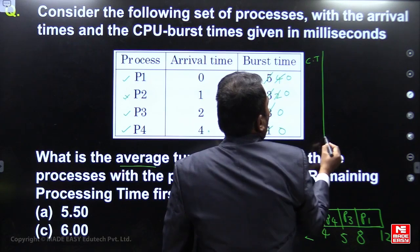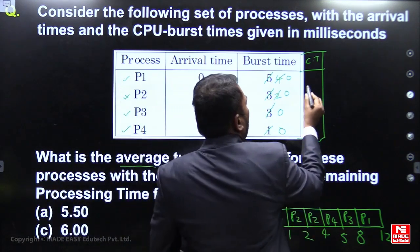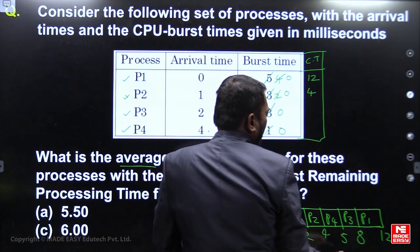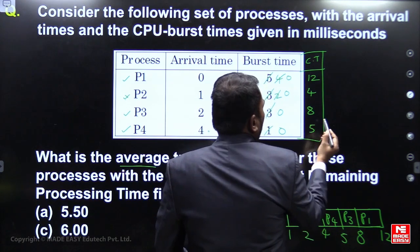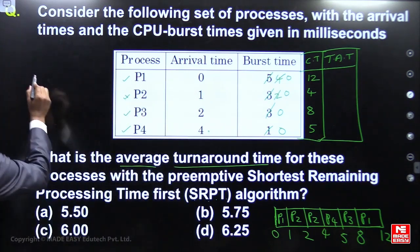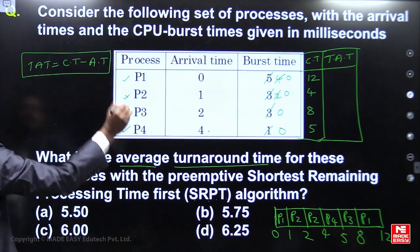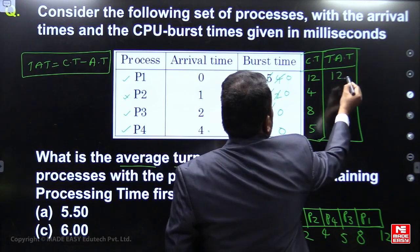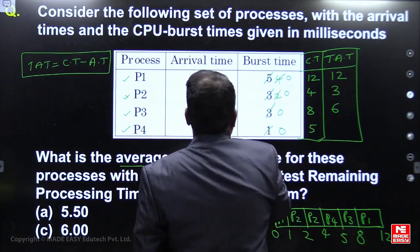Now find the completion times. P1 completion time is 12, P2 completion time is 4, P3 completion time is 8, and P4 completion time is 5. The formula for turnaround time is completion time minus arrival time. So: P1 = 12 − 0 = 12; P2 = 4 − 1 = 3; P3 = 8 − 2 = 6; P4 = 5 − 4 = 1.